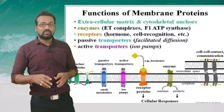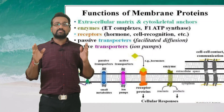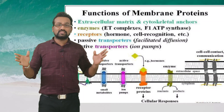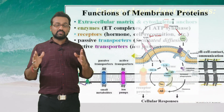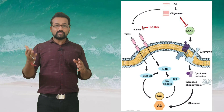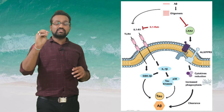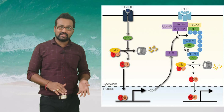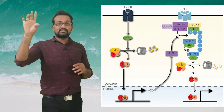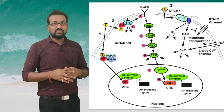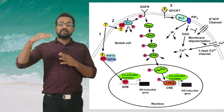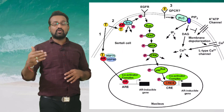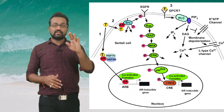This is a short video on how the membrane performs its functions with the help of these proteins. There are various other functions, such as signaling mechanisms — whatever signaling is done inside the cell is carried out by proteins present in the membrane. Many secondary messengers are present inside the cell, but many proteins on the membrane act as primary messengers. In upcoming lectures on signaling, we will discuss live examples of how this signaling takes place.